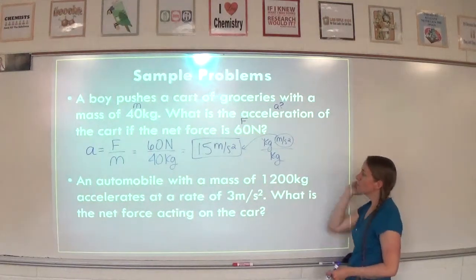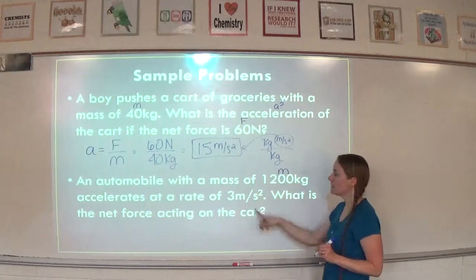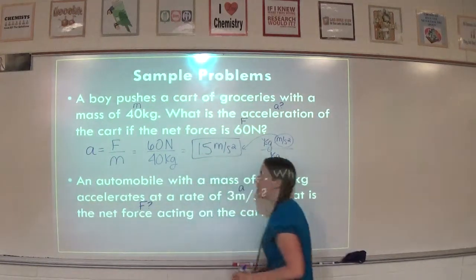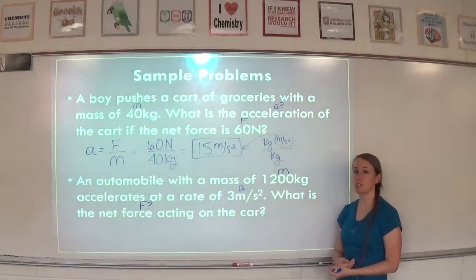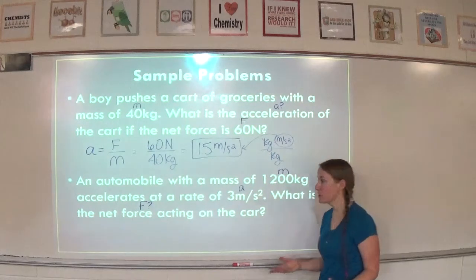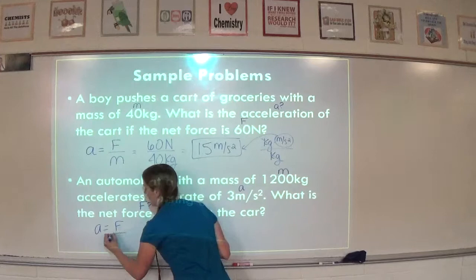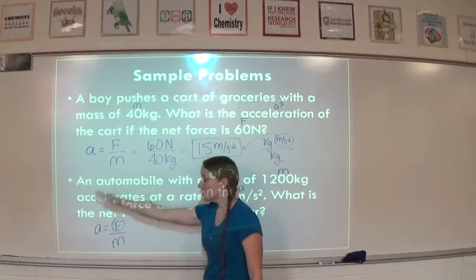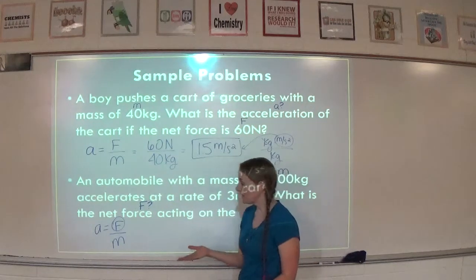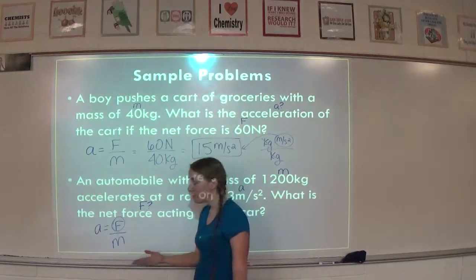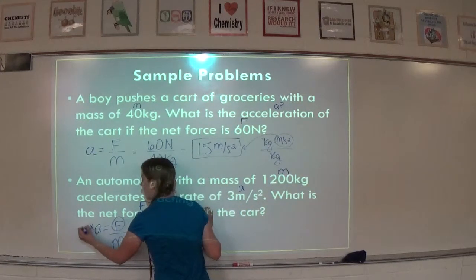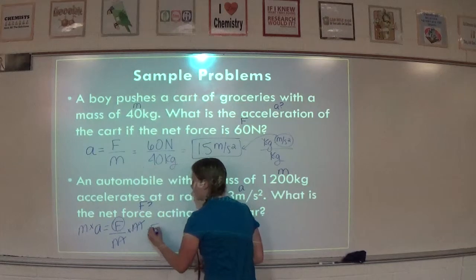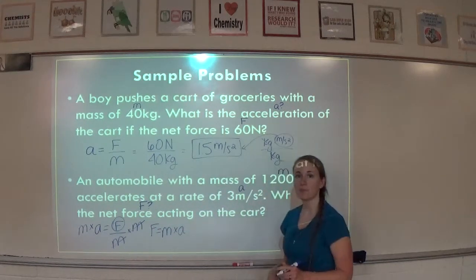An automobile with a mass of 1,200 kilograms accelerates at a rate of 3 meters per second squared. What is the net force acting on the car? You have to be able to rearrange a formula. Acceleration equals force over mass — we want to solve for force. Multiply both sides by mass, so the mass cancels on the right, giving force equals mass times acceleration. Plugging in: mass is 1,200 kilograms, acceleration is 3 meters per second squared, so force equals 1,200 times 3.